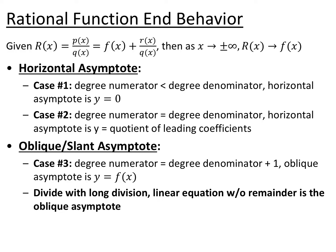For rational function end behavior, we're talking about what happens at the very ends of the graph as x goes to either positive or negative infinity, similar to a polynomial function. The way you find end behavior is to perform the polynomial division p(x) divided by q(x). Whatever the quotient part is—not the remainder—that is your end behavior. So as x approaches either positive or negative infinity, r(x) will approach whatever the quotient is.